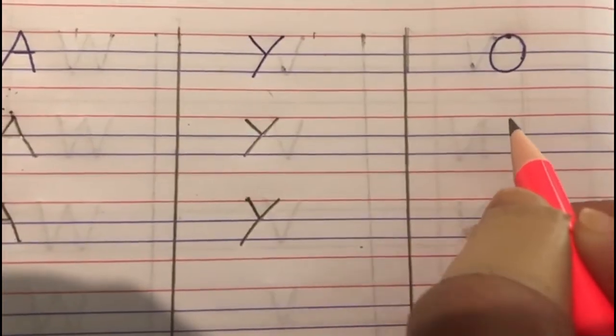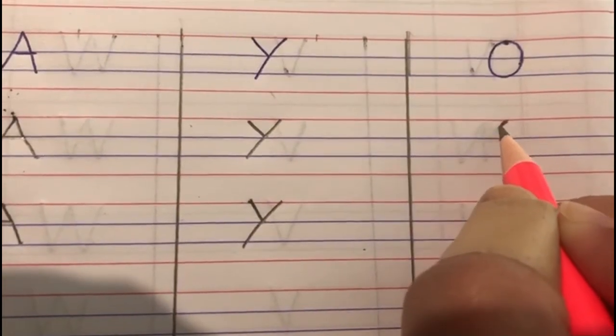Now, come on, let's write O. Start from the top red line, come down to the blue line and go back to the red line. O. Start from the red line, go down to the blue line, go up to the red line. O.